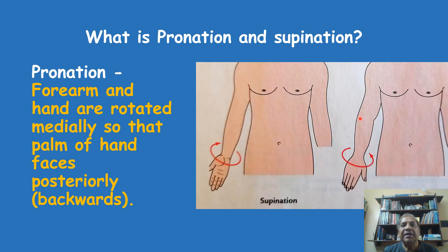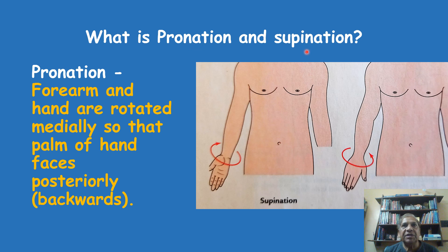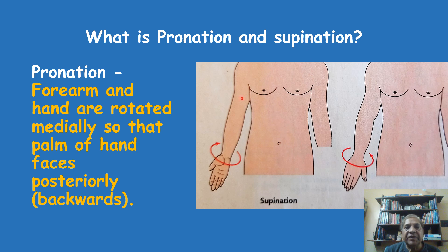Now we will see another pair of movements which are opposite to each other: pronation and supination. Remember that pronation and supination is a rotary movement — a rotation that occurs simultaneously in the forearm and in the hand. They move together as one single unit. Don't confuse it as the movement of the hand only; it is also the movement of the forearm.